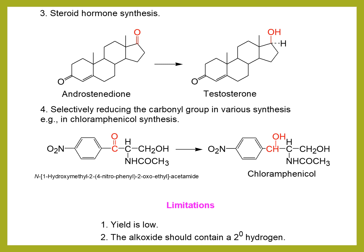We can also use the knowledge of MPV reduction reaction to synthesize some antibiotics like chloramphenicol. In chloramphenicol synthesis, we can see that the precursor of chloramphenicol contains a carbonyl group and we have to reduce this carbonyl group to a secondary alcohol group. So in this step, we can use the reaction mechanism of MPV reduction. Here I have mentioned some applications of this reaction. You can also include other applications which are related to MPV reduction reaction.